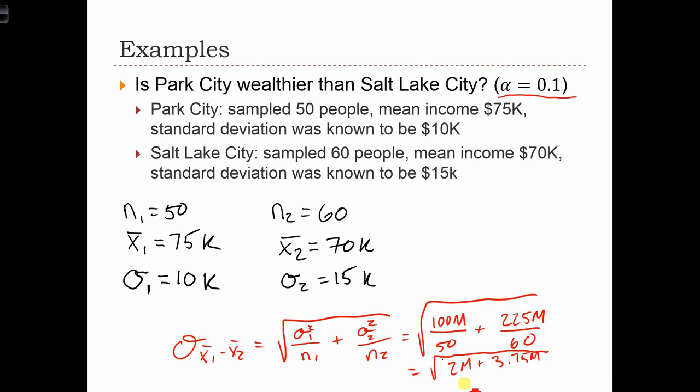This is equal to the square root of 2,000,000 plus 3.75,000,000, which equals the square root of 5.75,000,000, which is 2,398.